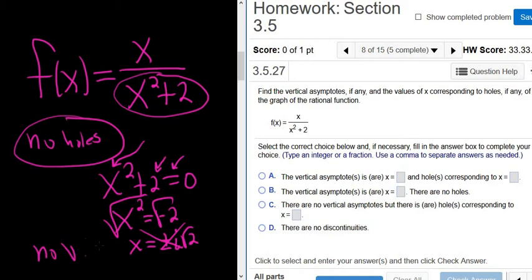So there's no vertical asymptotes. In this problem, there are no holes because nothing cancels, and there are no vertical asymptotes because the bottom is never equal to 0.